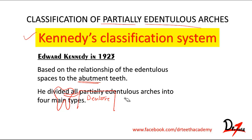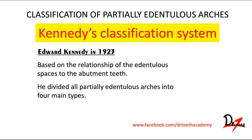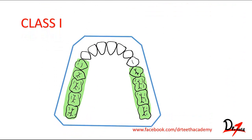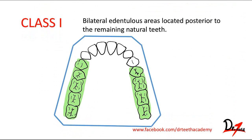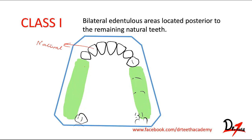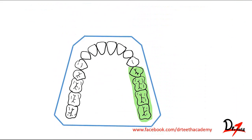Kennedy divided all partially edentulous arches into four main types. Class I states that there is a bilateral edentulous area located posterior to the remaining natural teeth. So these are our remaining natural teeth and we have edentulous areas posterior to them — this is Class I.